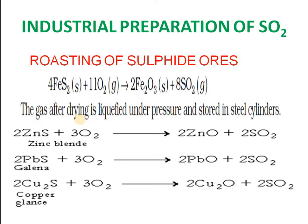Industrial preparation of sulfur dioxide involves roasting sulfide ores like iron sulfide (FeS₂) in the presence of air, which gives sulfur dioxide as the main product and Fe₂O₃ as a byproduct. The gas is dried, liquefied under pressure, and stored in steel cylinders — steel is used because sulfur dioxide is a corrosive gas, and steel prevents corrosion.